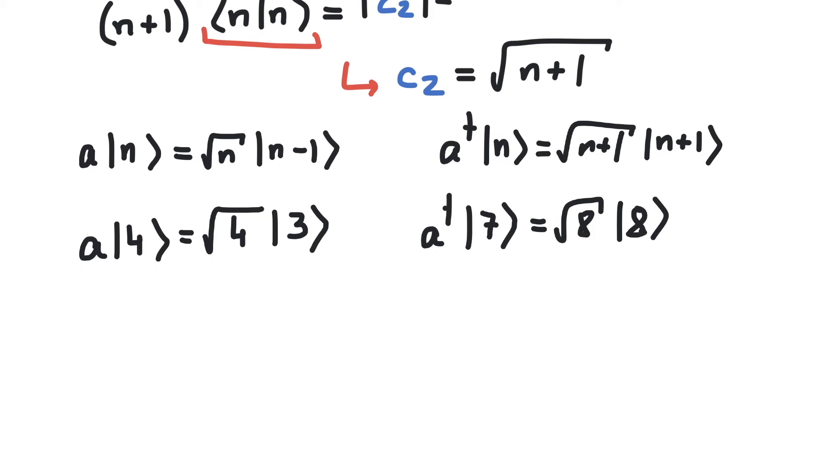An easy way to remember the constants here, the square root of n and the square root of n plus 1, is that the annihilation operator a has a strong resemblance to a derivative of a polynomial function. And as for a dagger, this resembles the rules for integration.